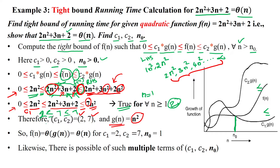For n = 2: 2·(4) = 8 ≤ 8 + 6 + 2 = 16 ≤ 7·(4) = 28. This is also true. From this, we can conclude that for all n values greater than or equal to 1, this condition will become true.